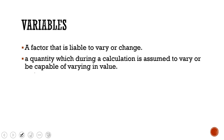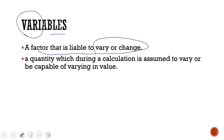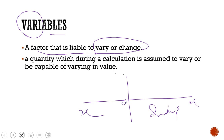There is another terminology called variables. From 'vary,' a variable is a factor that is liable to vary or change. A variable may be dependent or independent. For graphs, the independent variable is plotted on the x-axis, whereas the dependent variable is plotted on the y-axis — this is the standard method. You may come across different types of variables in physical or mathematical sciences: dependent, independent, nominal, or ordinal.